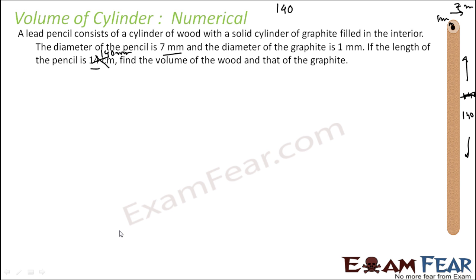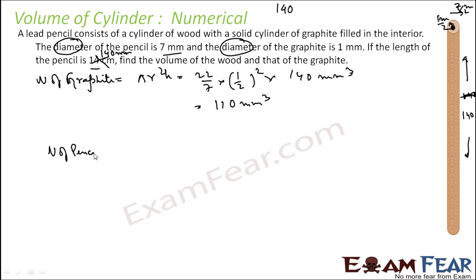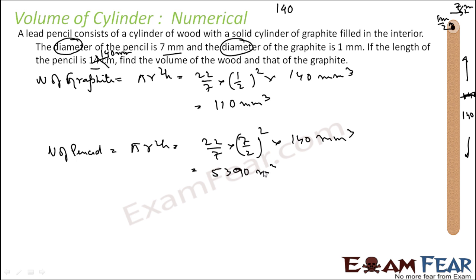Volume of graphite = π r² h = 22/7 × (1/2)² × 140 = 110 millimeter cube. Volume of the whole pencil = π r² h = 22/7 × (7/2)² × 140 = 5390 millimeter cube.